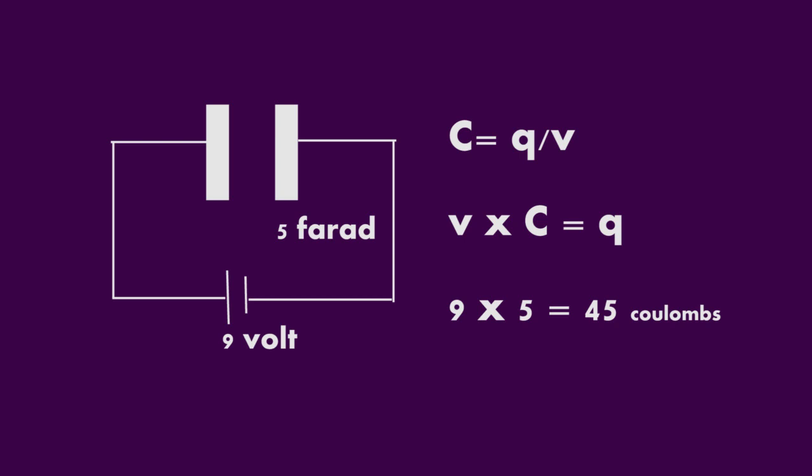The potential difference is equal to 9 volts. We will apply the formula of capacitance: C equals q over V. Here we want to find out the amount of charge. The V is getting divided here; when it goes to the other side of the equation, it will be multiplied with the capacitance C. And the answer will be equal to 45 coulombs.